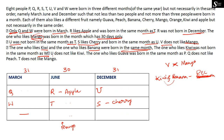The next clue says U does not like kiwi. Since kiwi and banana are both in December, and U is in December but doesn't like kiwi, U must like banana. That means kiwi belongs to the remaining December person, which is V. So V likes kiwi.